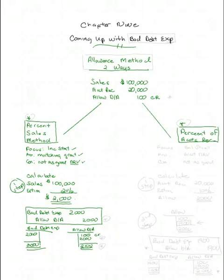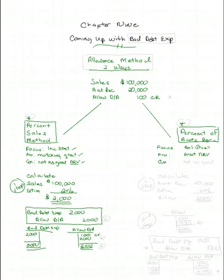The focus of the accounts receivable method is on the balance sheet. The pro of the percent of accounts receivable method is it gives you a great net realizable or cash realizable value. The con is it's not as good at matching because it doesn't really consider the relationship of bad debt against sales. But it's really great at net realizable value.